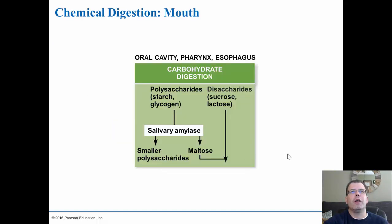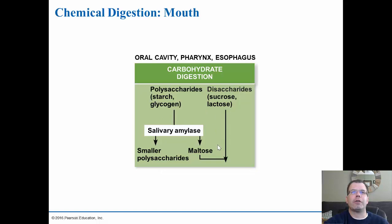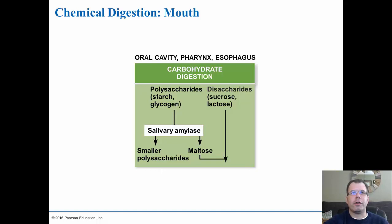Looking at chemical digestion: in the oral cavity, salivary amylase breaks down polysaccharides — things like starch, glycogen, sucrose, lactose, and maltose — into smaller polysaccharides. So the primary chemical digestion in the mouth targets sugars and carbohydrates.